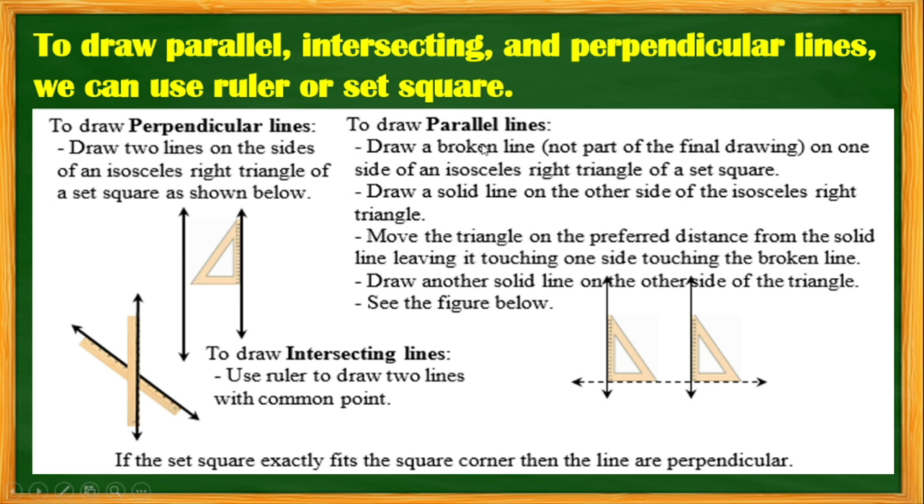To draw a parallel line, draw a broken line, not a part of the drawing, on one side of the isosceles right triangle of the set square. Draw a solid line on the other side of the isosceles right triangle. The other side, this would be the side for the broken line.